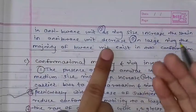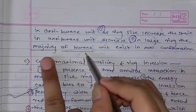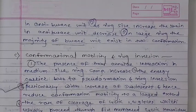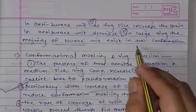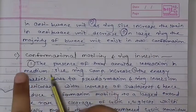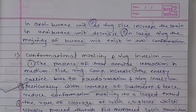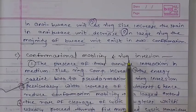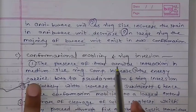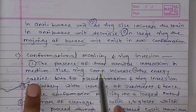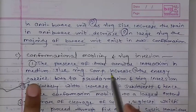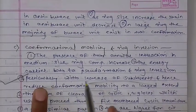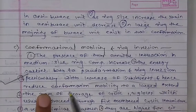As the ring size increases, the strain decreases. The majority of conformations involve the butane unit, and there are two conformations — cis and trans, E and Z. These two conformations involve transannular interactions. The medium size compound increases in the first point. The energy carrier involves pseudo rotation and ring inversion.